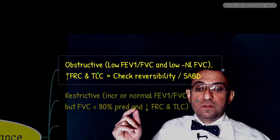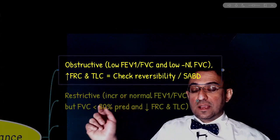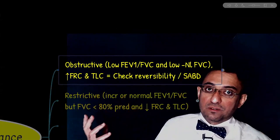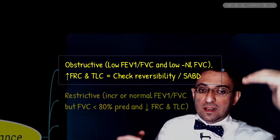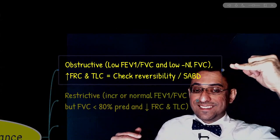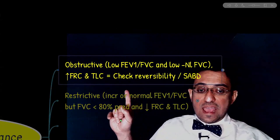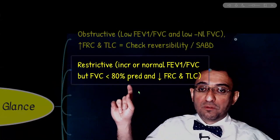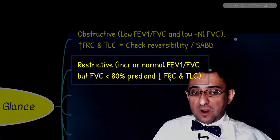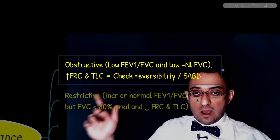Functional residual capacity and total lung capacity are decreased in restrictive lung disease when FEV1, FVC, or their ratio are not provided. But in obstructive lung disease, these two — FRC and TLC — are increased. This is logical because in obstructive lung disease we have hyperinflation and air trapping. So analyze either via FEV1/FVC ratio, or FEV1 dropped out of proportion to FVC in obstructive, or FVC dropped out of proportion to FEV1 in restrictive.